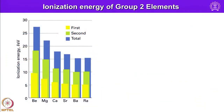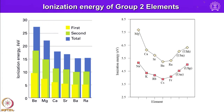Second ionization enthalpies are higher than the first ionization enthalpies for all alkaline earth metals. A plot of ionization energies shows that first ionization energies are much higher than second ionization energies, and the overall ionization enthalpies of all alkaline earth metals are significantly higher than those of alkali metals or group 1 elements.